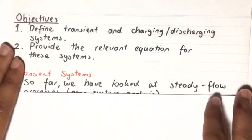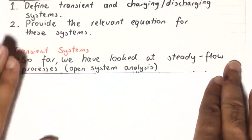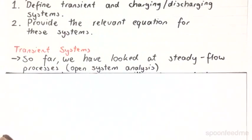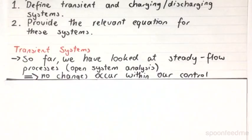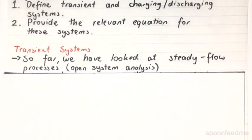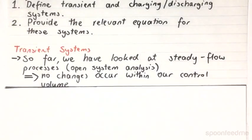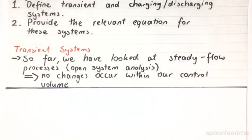So far we have been looking at steady-state steady flow processes. From our open system analysis, if you go back, you will find that the mass flow rate in will equal to the mass flow rate out.